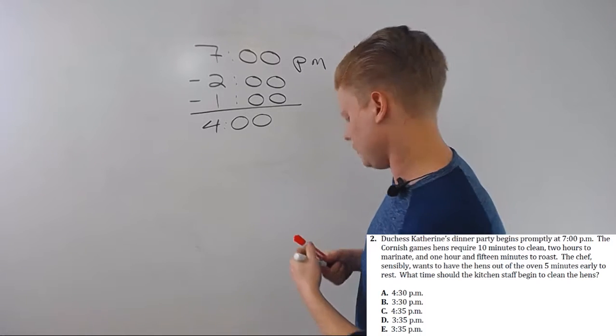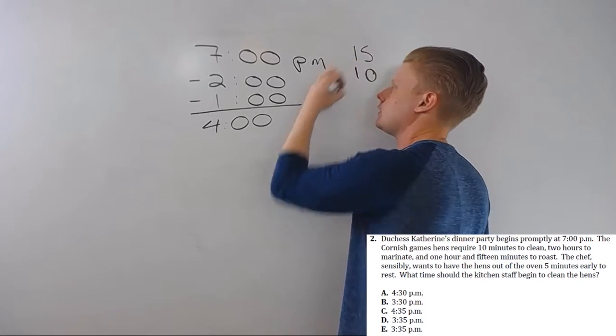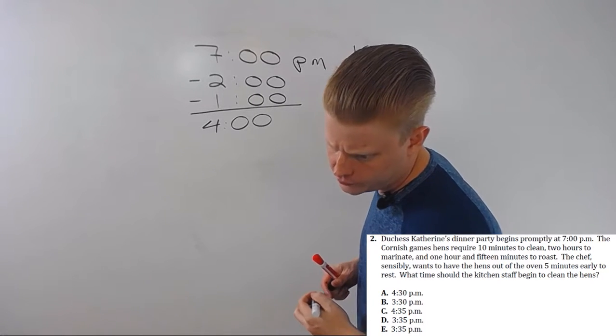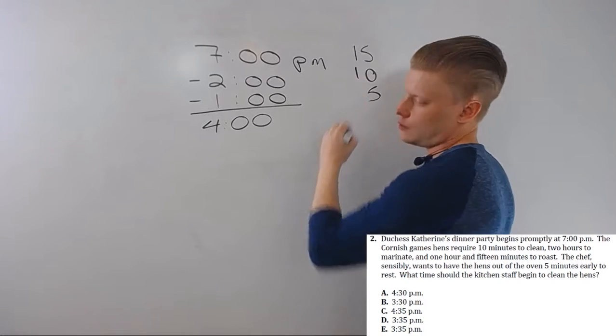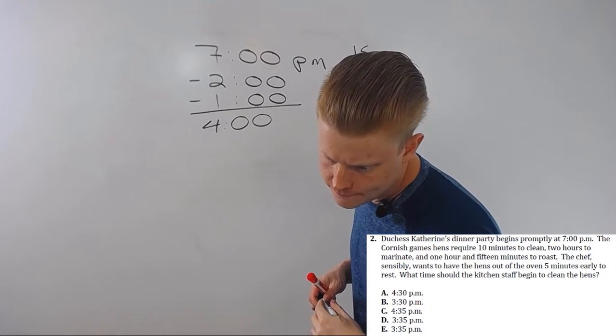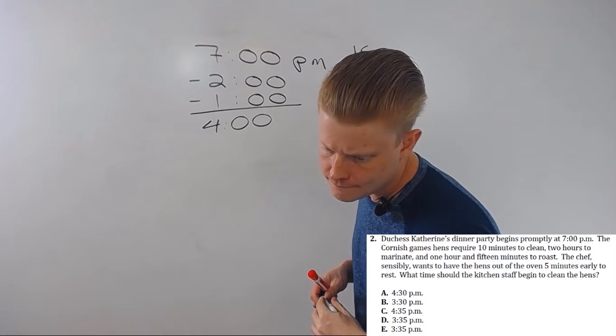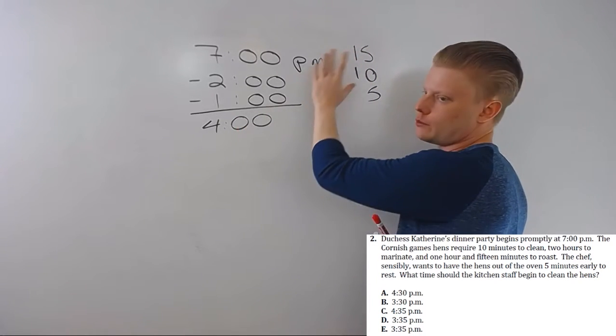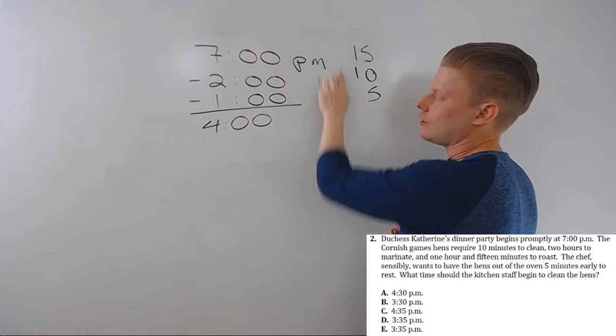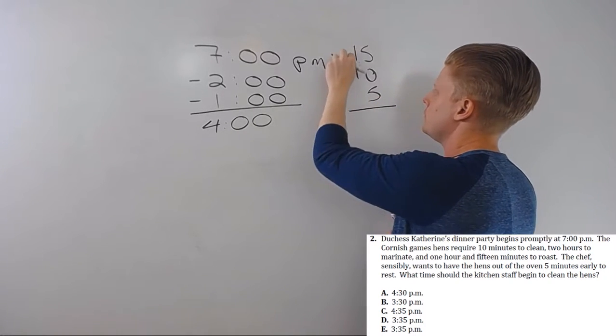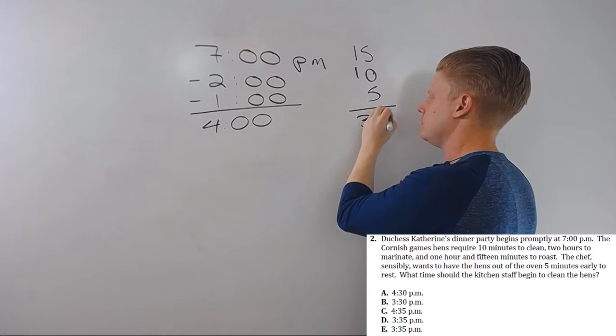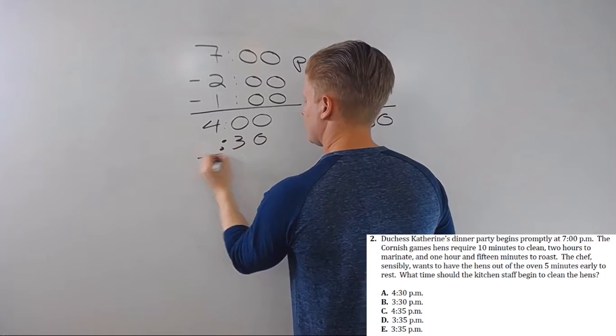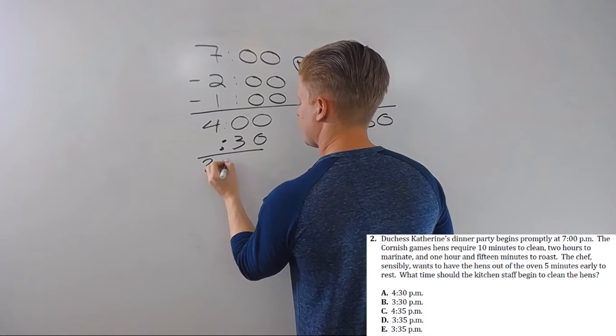10 minutes to clean. So I've got 10 minutes here. 5 minutes to rest. And that's it. So I can either add these up and subtract them or just subtract them either way. Since I already got them over here, I'll add them up: 15 plus 10 is 25, plus 5 is 30. So now I'm going to subtract 30 minutes - 3 hours and 30 minutes.